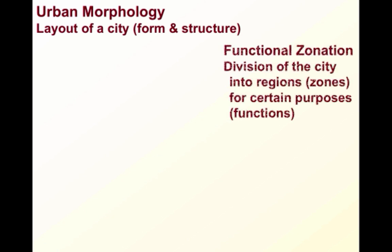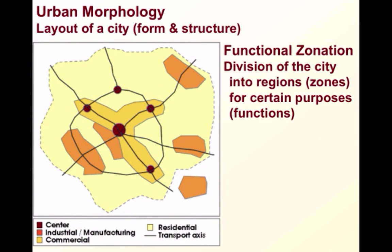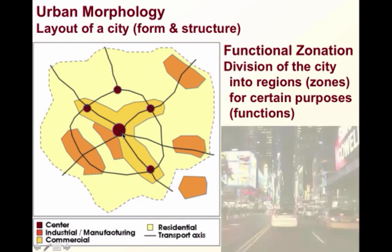First, we're talking about urban morphology — the layout of a city, looking essentially at its form and its structure. Another term you need to know is functional zonation, or basically the division of the city into different regions or zones for certain purposes or functions. This graphic does a pretty good job of showing you the different kinds of zones that you might see in an urban area.